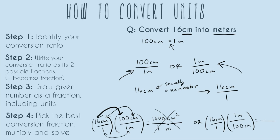With the correct conversion fraction, the most important part is the cancellation. Centimeters is on top in our number, and centimeters is on the bottom of the conversion fraction, so we can cancel them out. Now when we multiply, it's just 16 times 1, which is 16, and our unit is meters. On the bottom, it's 1 times 100, which is 100, and there's no unit on the bottom because centimeters got canceled out. So we have 16 meters over 100, which simplifies to 0.16 meters — our correct answer.